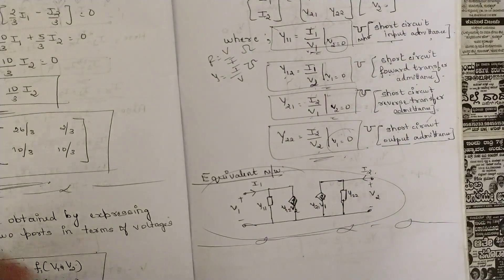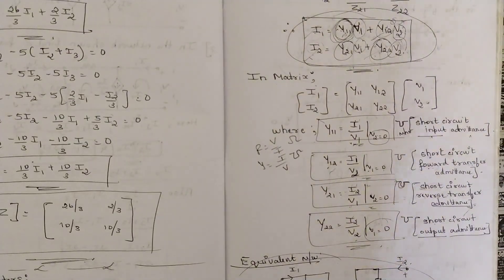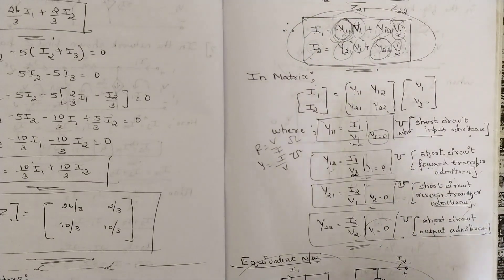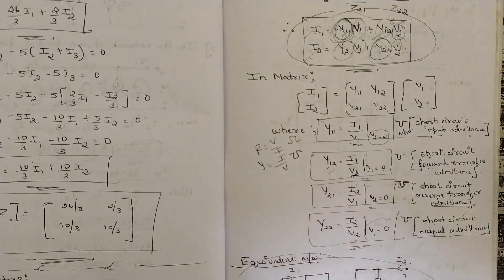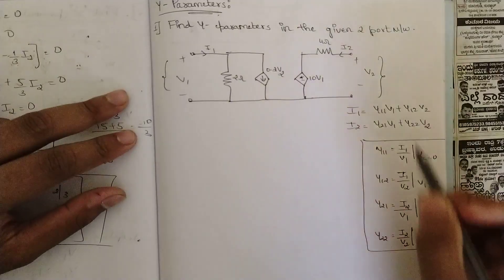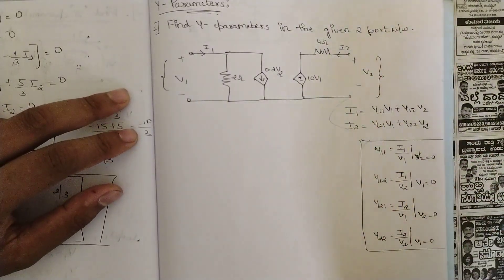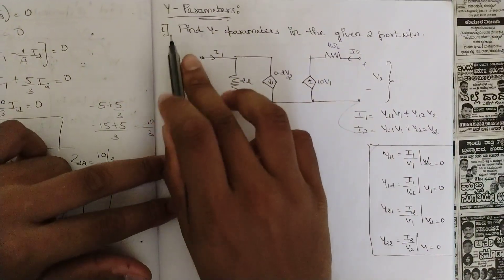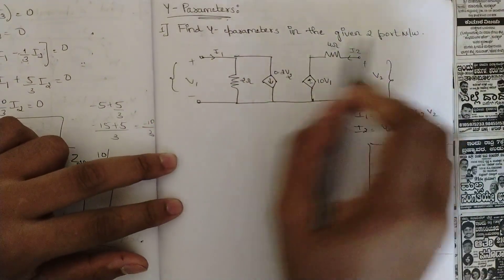So if you know Z parameters very well, Y parameters is very easy. Now let us solve some problems related to Y parameters to make it clear. The first problem asks us to find the Y parameters of the given two-port network. I have written the set of equations here.